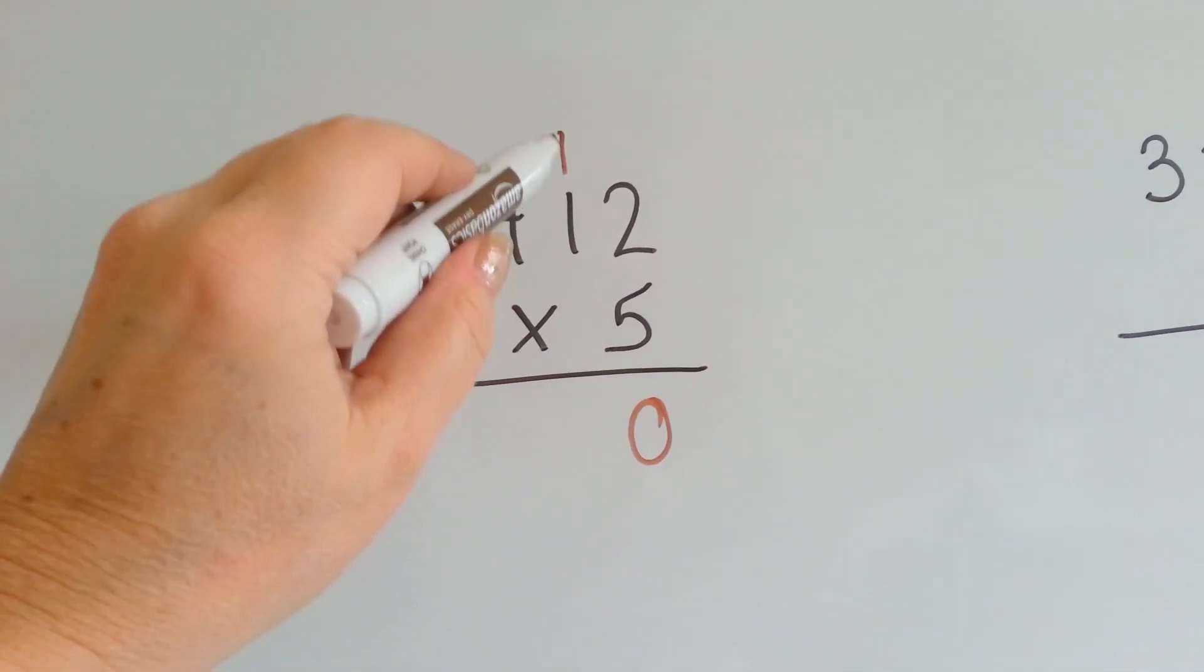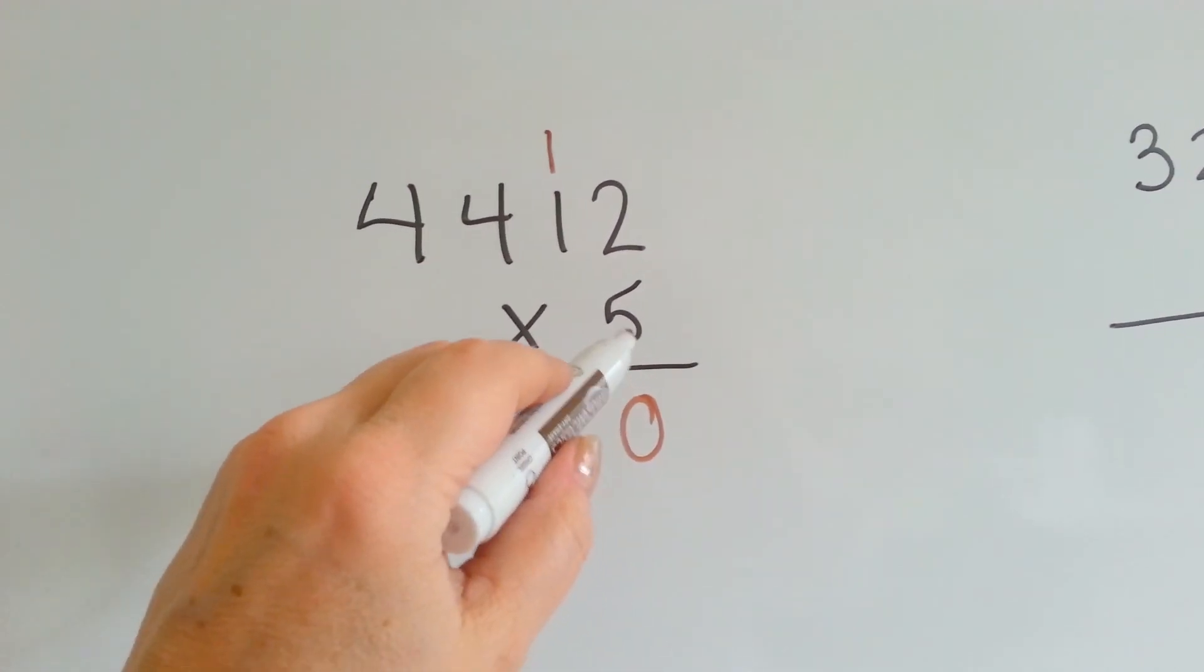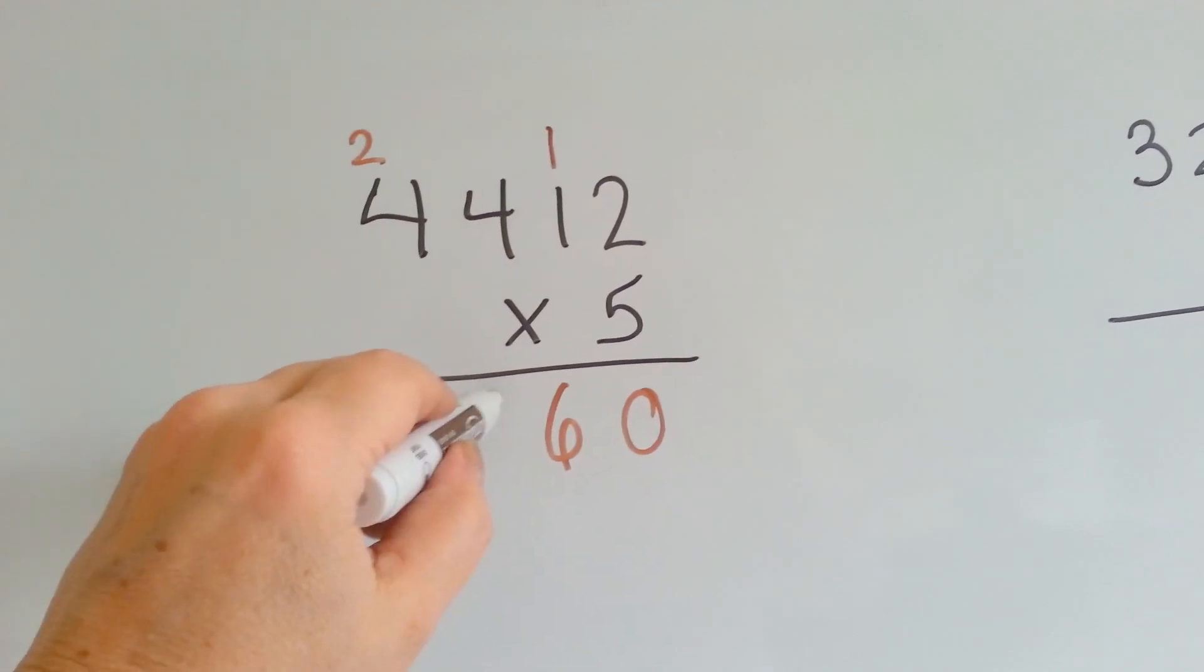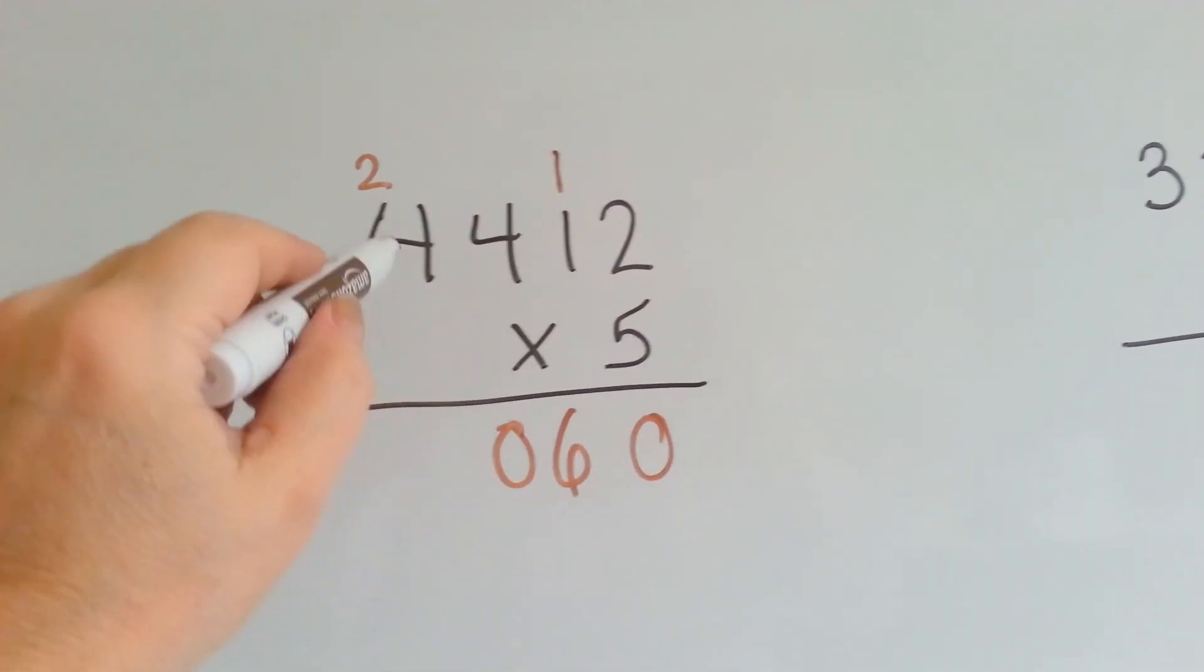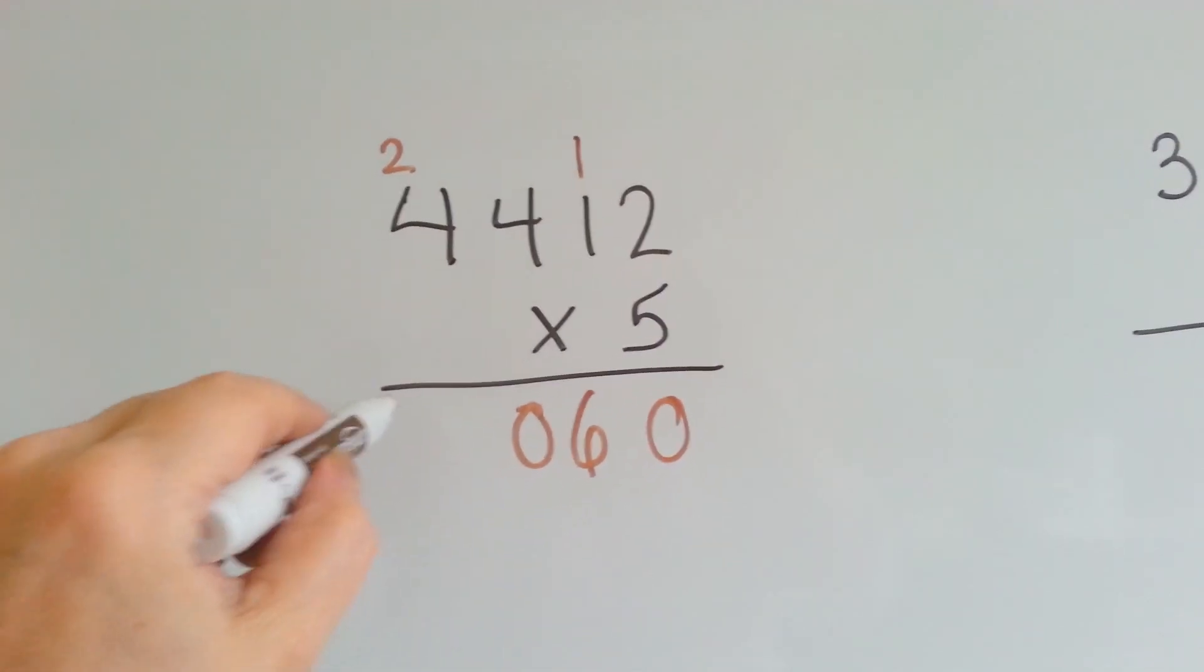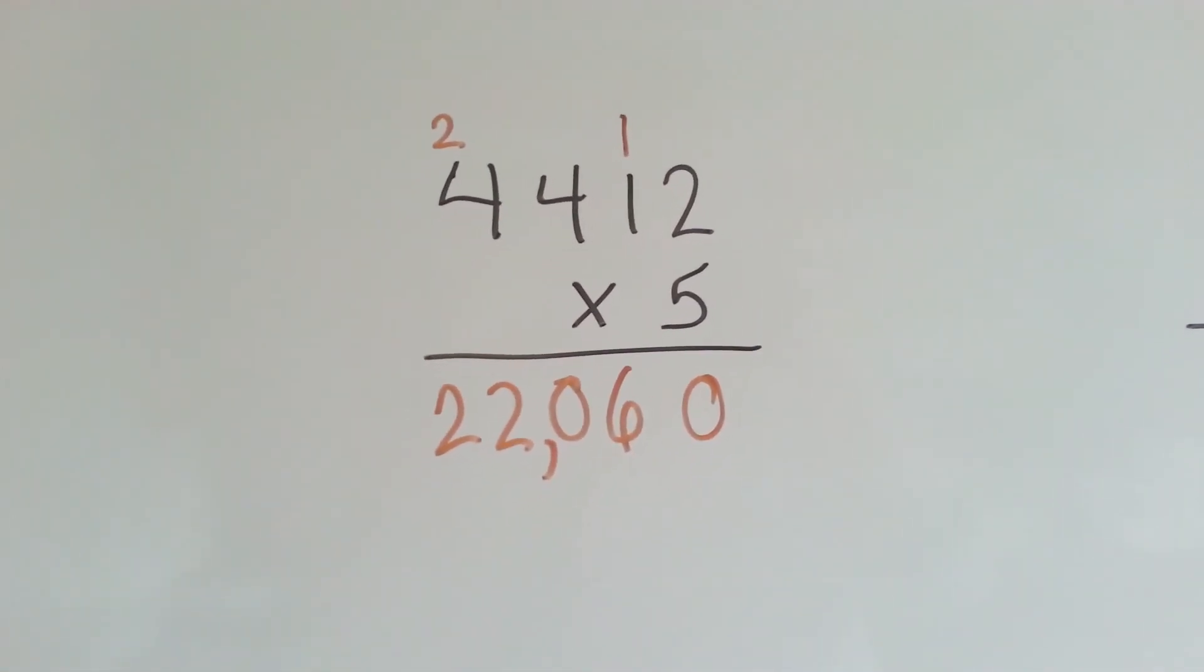5 times 1 is 5, plus the 1 is 6. There's no carryover on that one. 5 times 4 is 20. We put the 2 up and the 0 down. And 5 times 4 is 20 again, except we add the 2, so now we have 22. Our answer is 22,060.